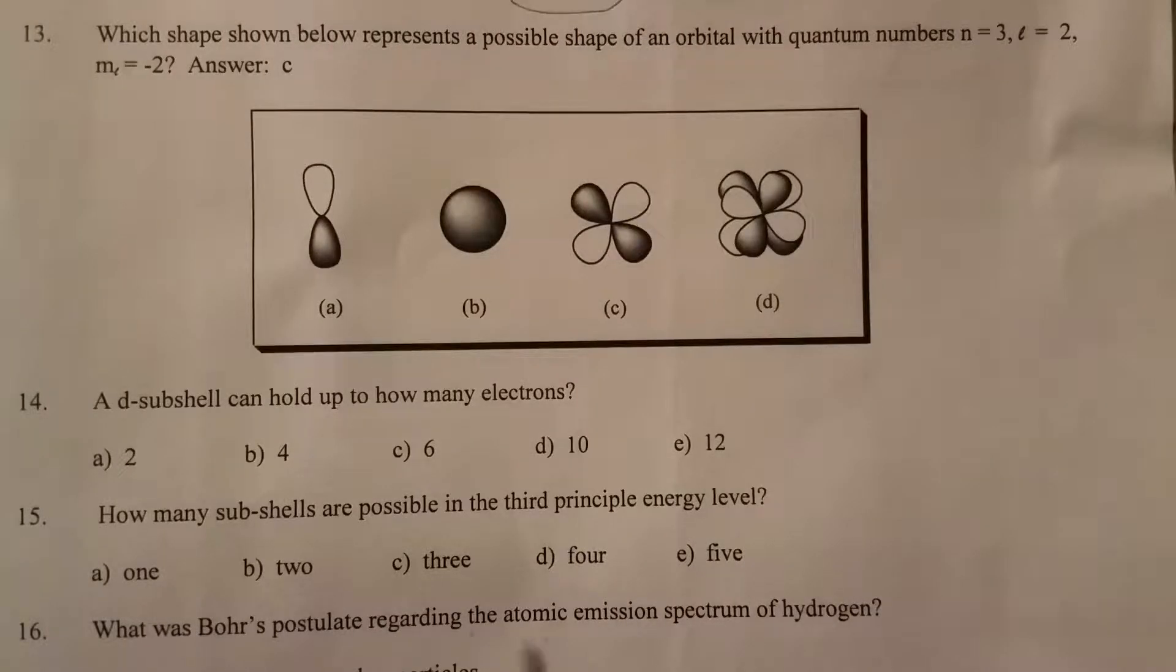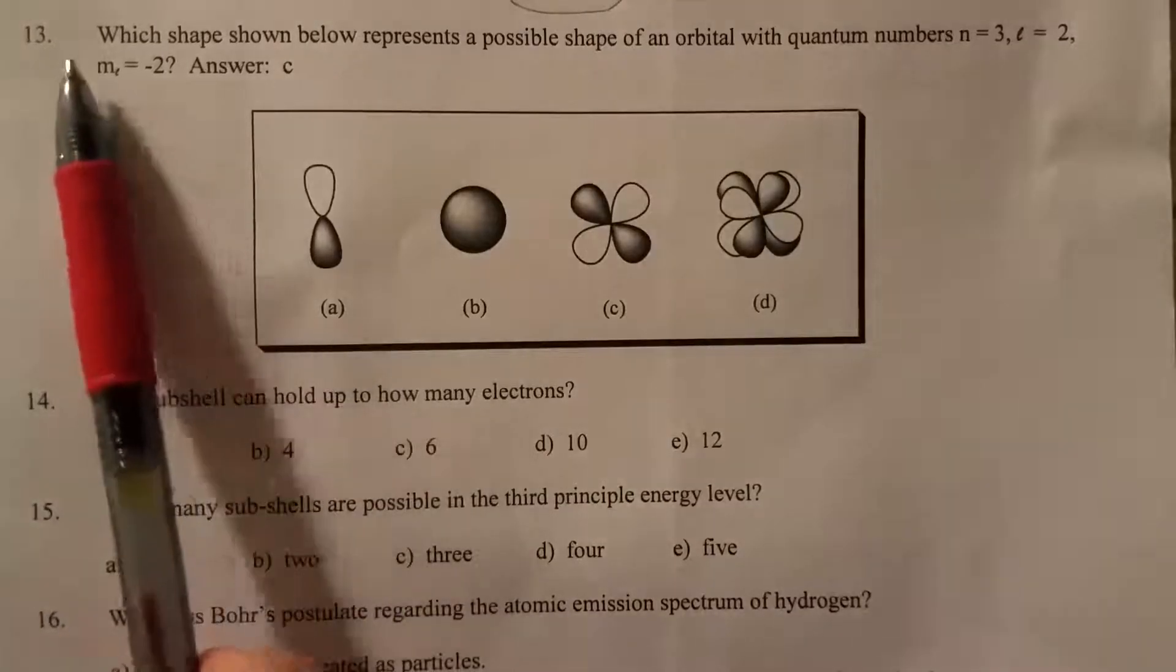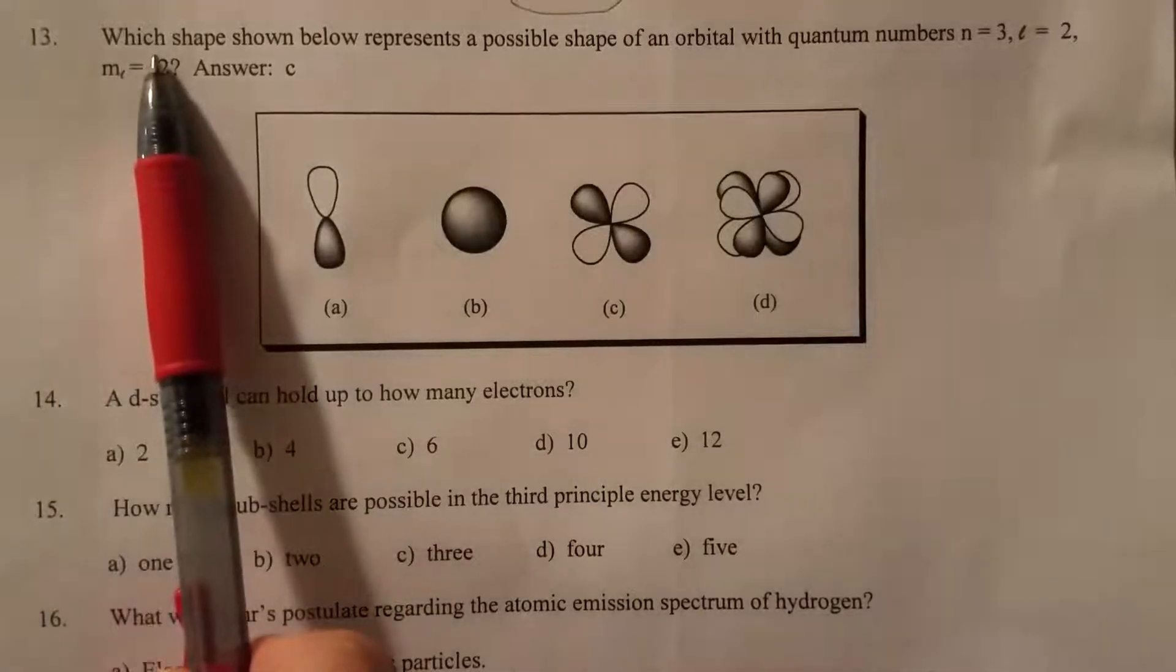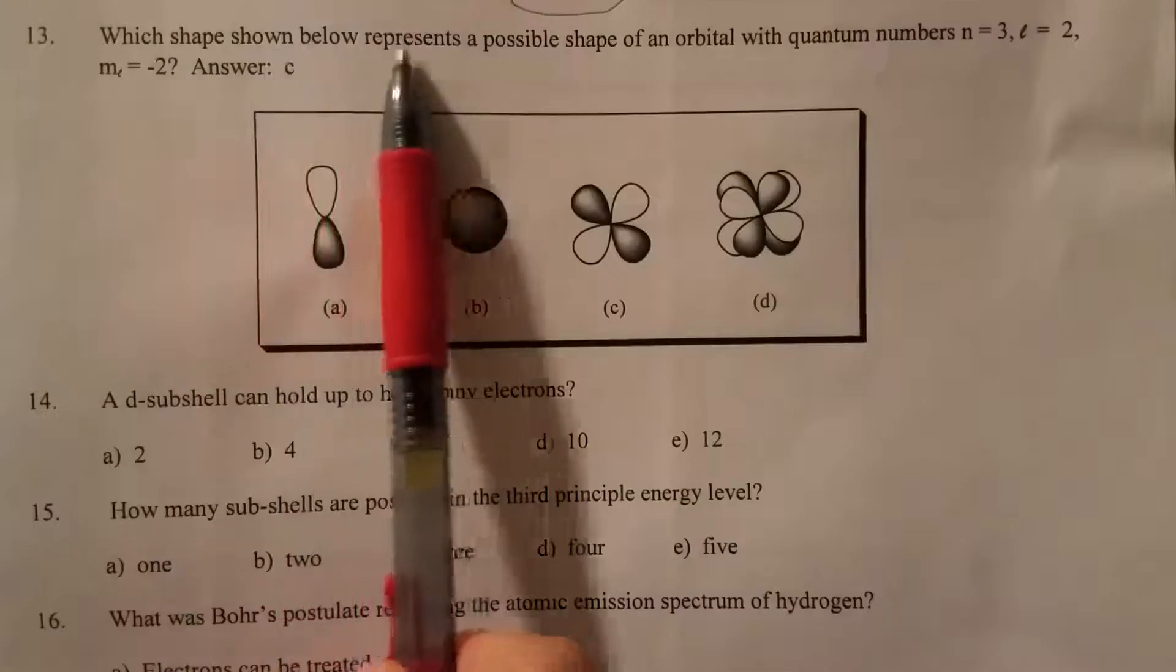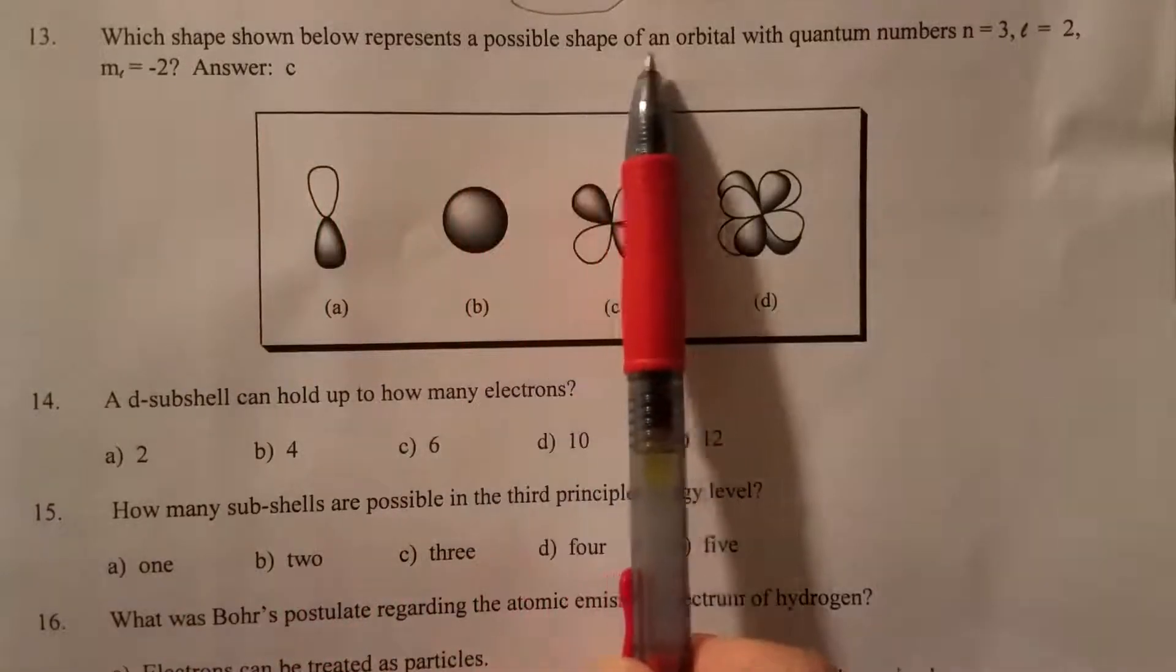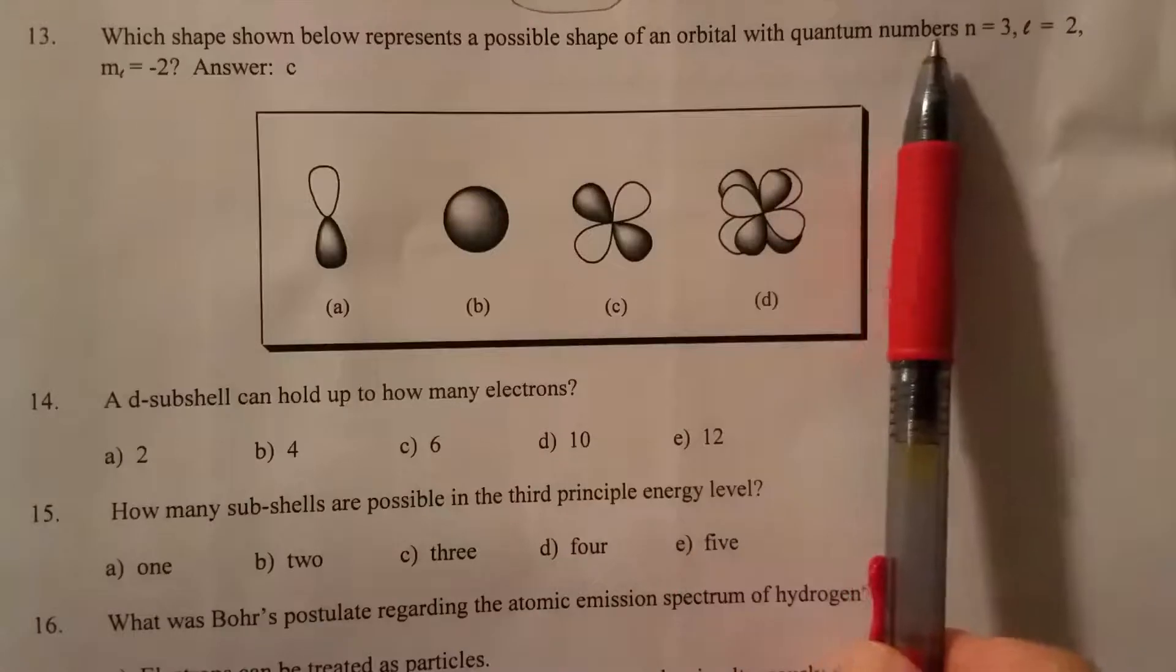Now practice exam 3, question number 13. Which shape shown below represents a possible shape of an orbital with quantum numbers?